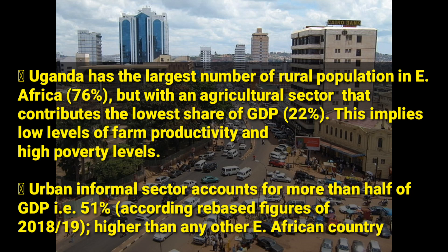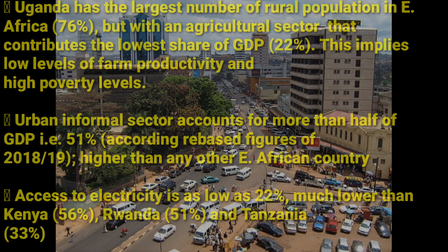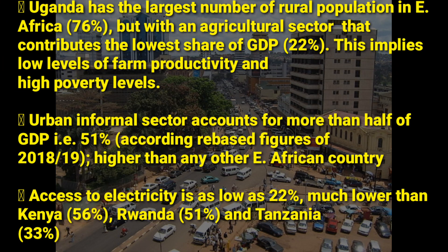People who do normal businesses in the informal sector — like market vendors — contribute a higher percentage, more than half of GDP, which is 51%. Another point is that access to electricity is as low as 22%, much lower than Kenya at 56%.